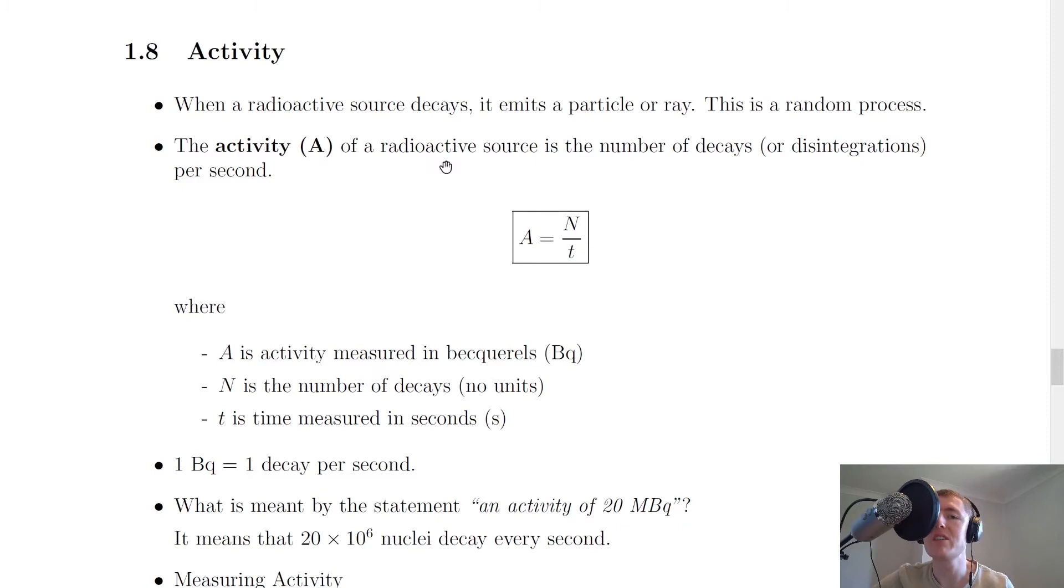This is called the activity of the radioactive source. We give the activity the symbol A, and this is defined as the number of decays or disintegrations per second. You can word it as either number of decays or number of disintegrations per second.